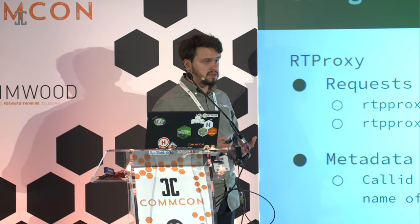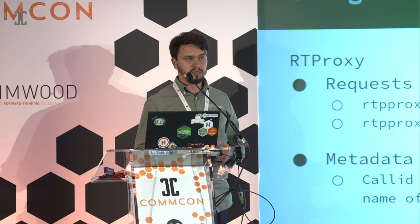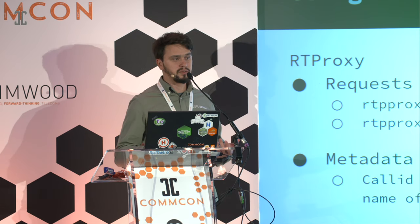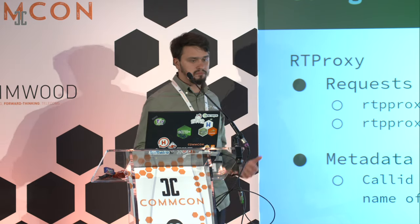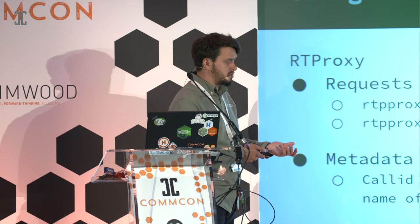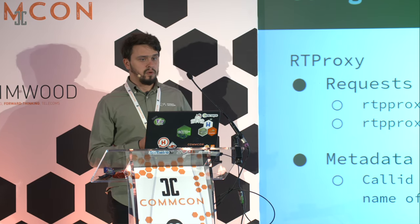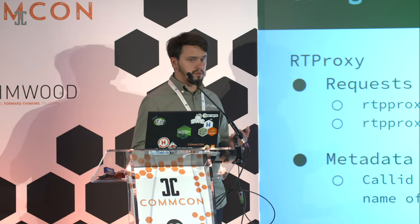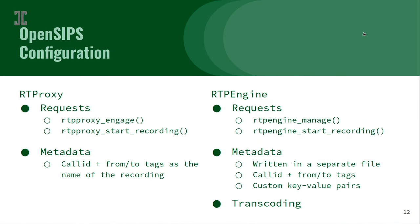A very nice feature that RTP engine has is the ability to do transcoding. You can use the media relay to do transcoding in case your two endpoints don't support the same codec. You can also do SRTP-to-RTP conversions. So RTP engine is quite powerful. I think RTP proxy also has it on its roadmap, but I'm not sure when it's going to be released.